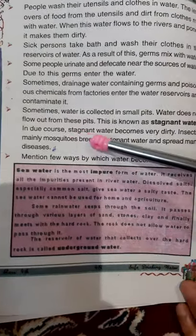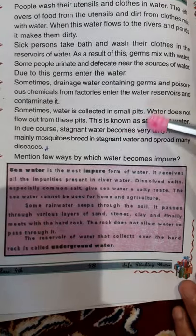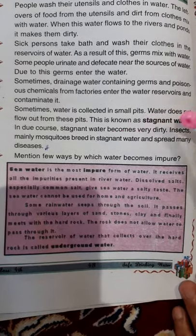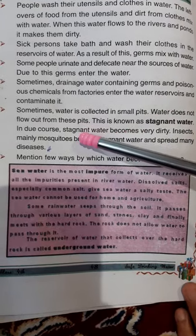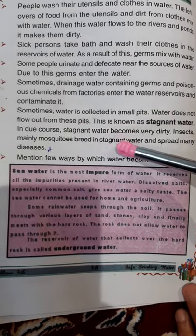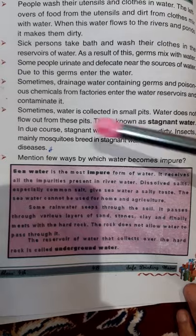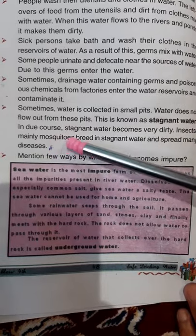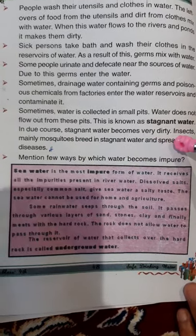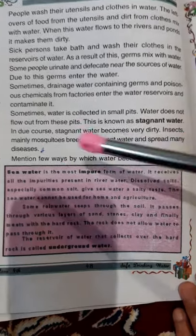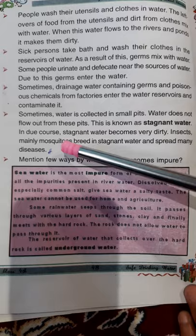Sometimes water is collected in small pits and does not flow out. This is known as stagnant water. In due course, stagnant water becomes very dirty.